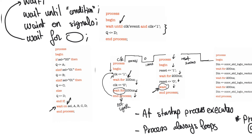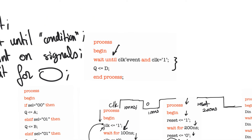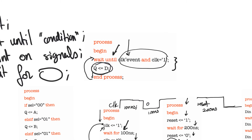In this piece of code, when we start execution we hit a wait until statement and freeze. We wait until a clock event happens and clock equals 1 — which means a positive edge of the clock. Only when we reach the positive edge will we execute Q equals D. This basically implements a D flip-flop. Once we execute Q equals D, we reach end process, loop back, and return to the wait until statement.